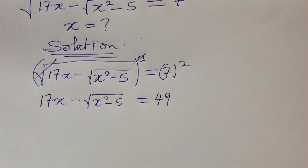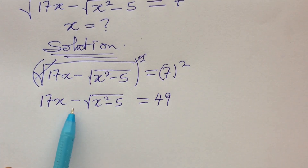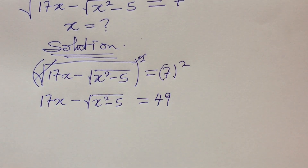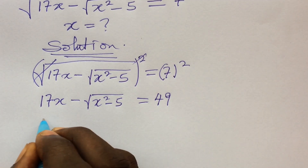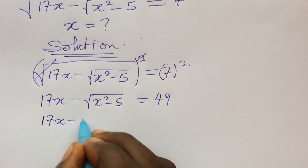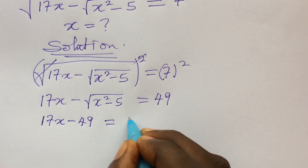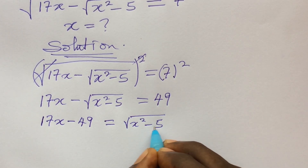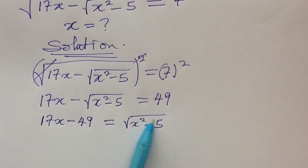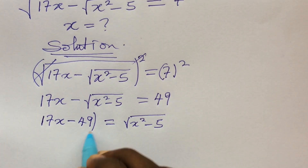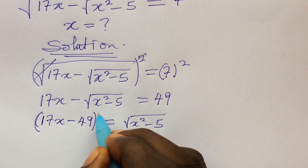At this point, we move this radical to the right-hand side of the equation and move this constant to the left-hand side. If we rearrange, we get 17x minus 49 equal to the square root of x squared minus 5. Because we are still having a radical on the right-hand side, we have to eliminate it by taking the square of both sides again.